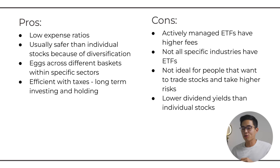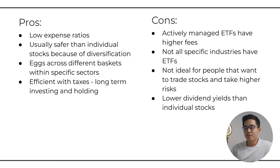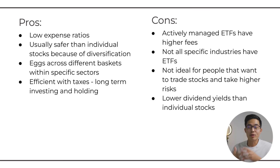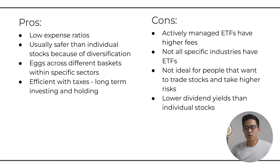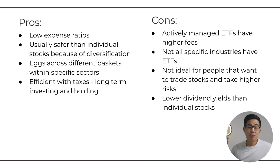Now that we've talked about ETFs, let's go over some of the pros and cons. Pros are going to be the low expense ratios — it costs very little to hold these ETFs. ETFs are also usually safer than individual stocks because you are basically diversifying, spreading out the risk over multiple companies. That way, if one particular company goes out of business, you're not going to lose all your money. You're holding your eggs across different baskets within specific sectors. Holding ETFs can also be very efficient when it comes to taxes, especially when you go into long-term investing for periods of one year or more.